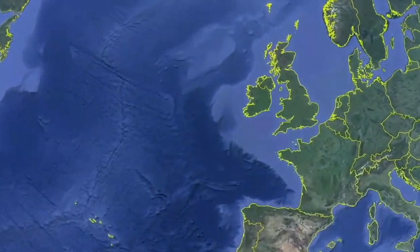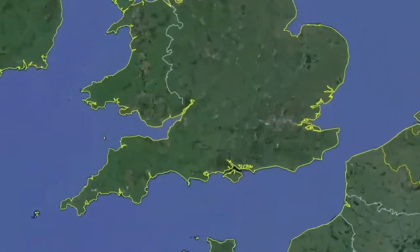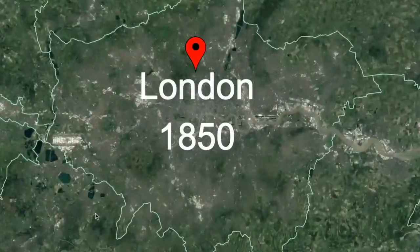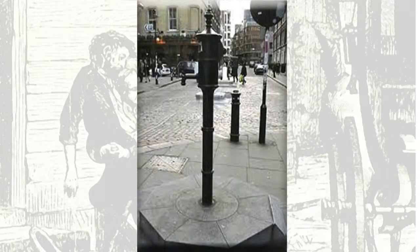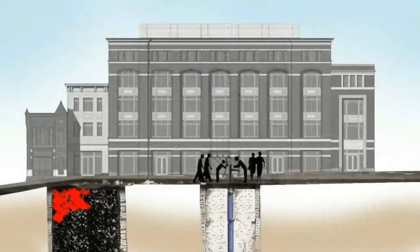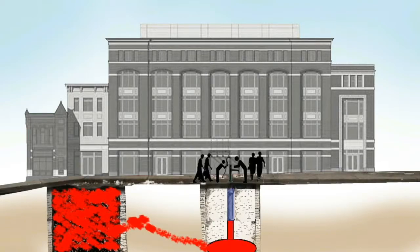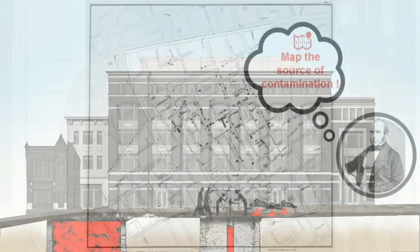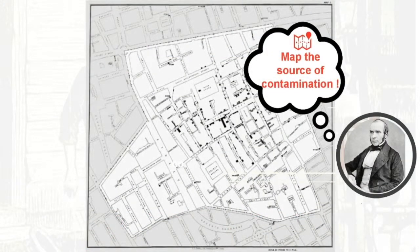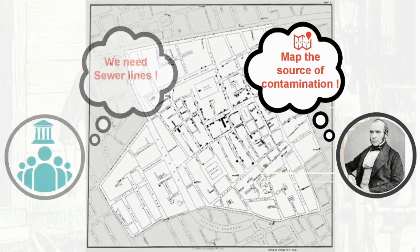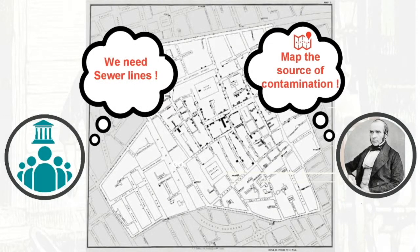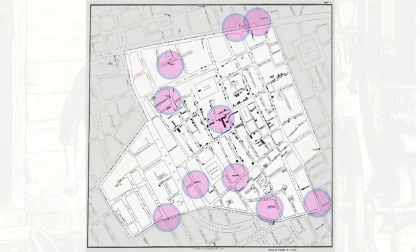Mid 19th century London. The source of a deadly epidemic in a crowded neighborhood was puzzling city officers. A physician named John Snow started mapping the outbreak with the location of water pumps and cesspools, and a solution was found. The map went on to create history by not only preventing thousands of deaths but also for showing the role of spatial analysis in shaping public policies for human development.